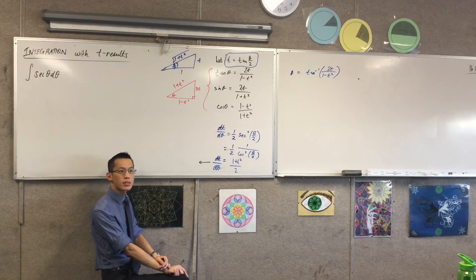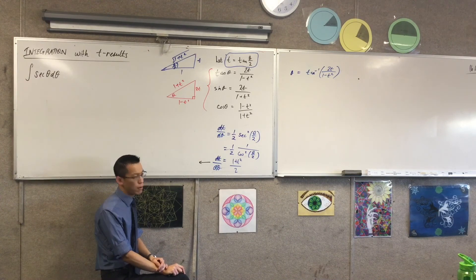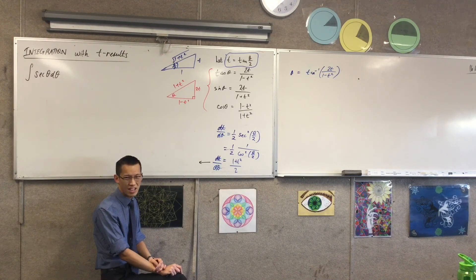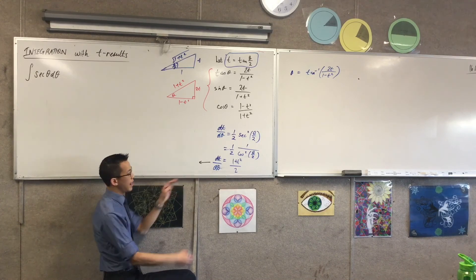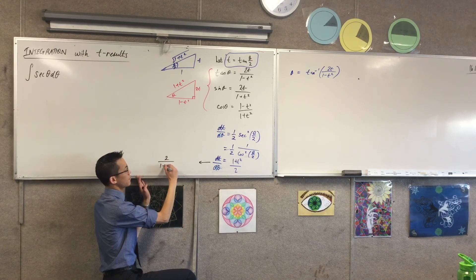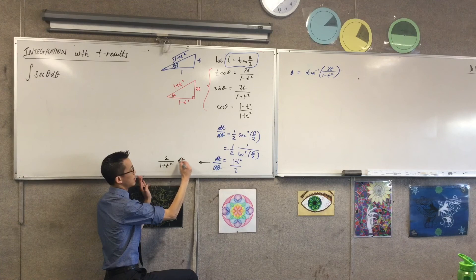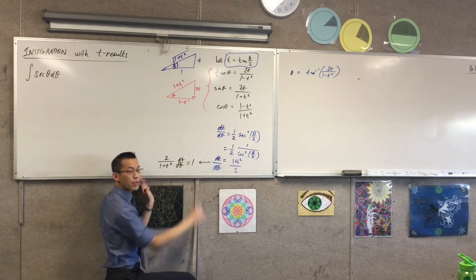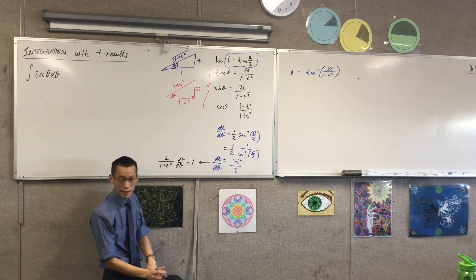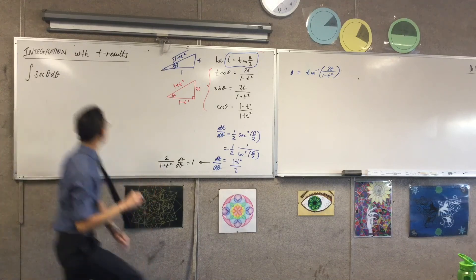So I'm going to divide both sides by 1 + t²/2. That way I'll have 1 on the right-hand side. And a 1 I can substitute in where I like, those dθ's will cancel. So let's have a go at this.